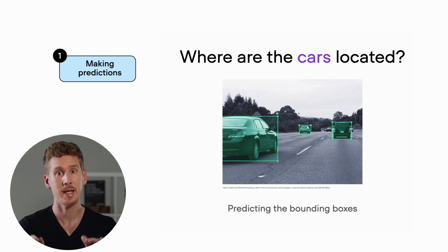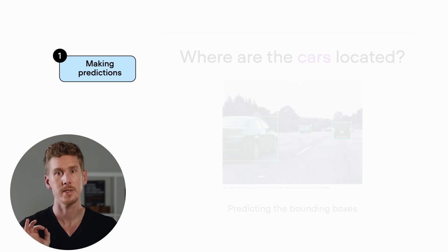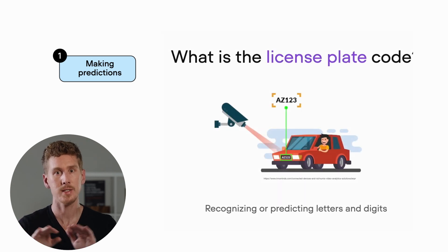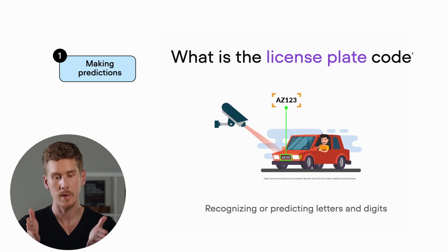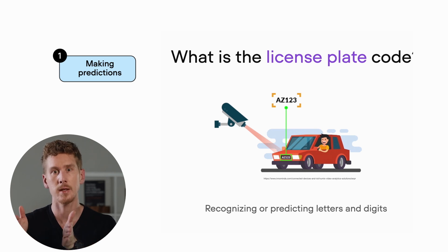Related to the object detection problem, there's also a coupled problem where we combine object detection with predictions. For example, imagine we have a license plate reader where we first locate the license plate in an image or in a video stream, and then we have a machine learning system that extracts the digits and numbers that make up this license plate. These are just a few examples of where we can use machine learning for making predictions.